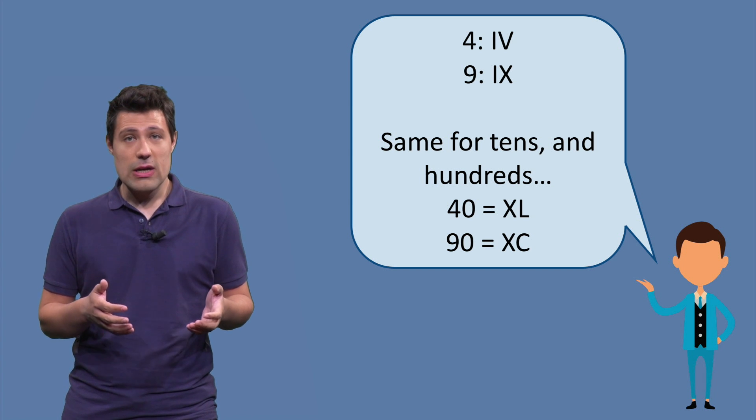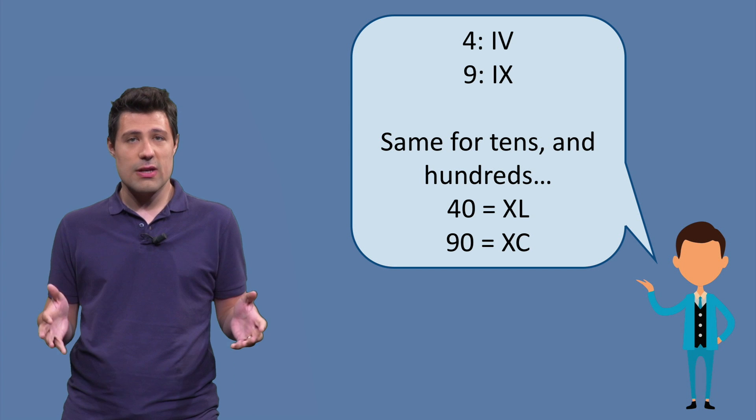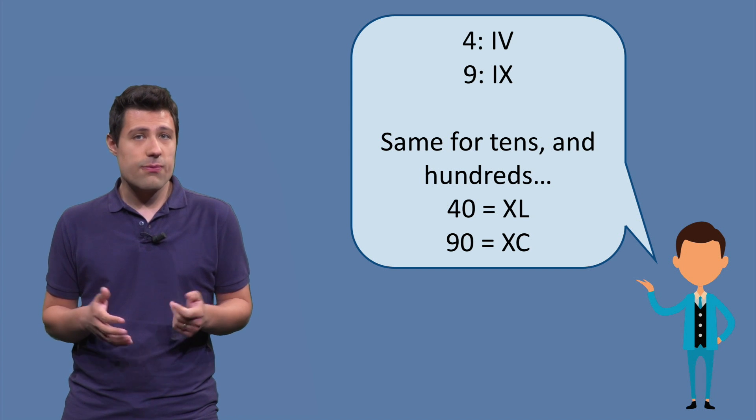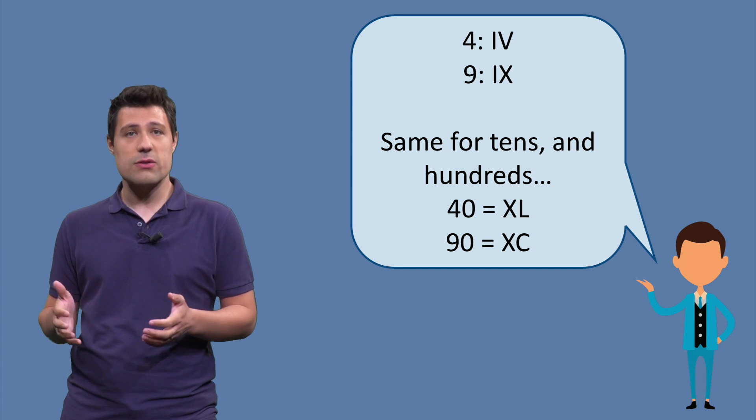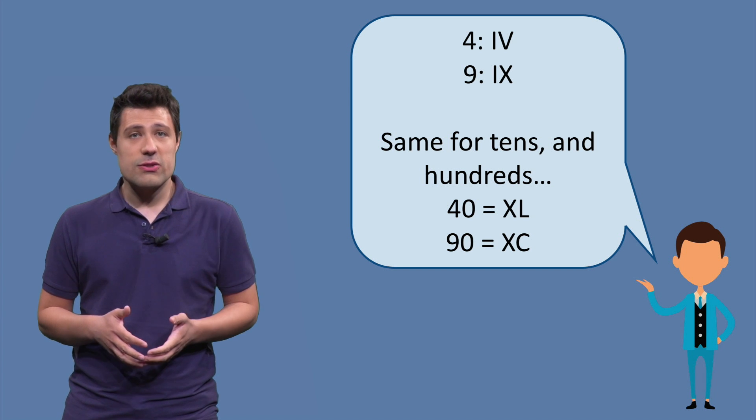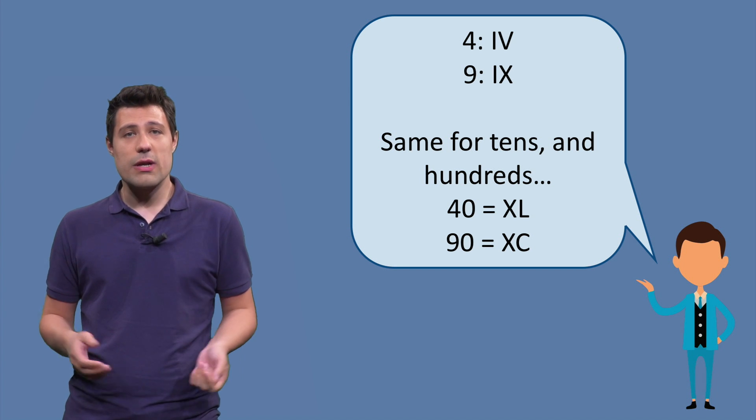It happens whenever we have 5s, 10s, 50s, 100s, etc. So, for example, the number 40 is not X, X, X, X, but it's XL, 90 is XC, and so on and so forth.